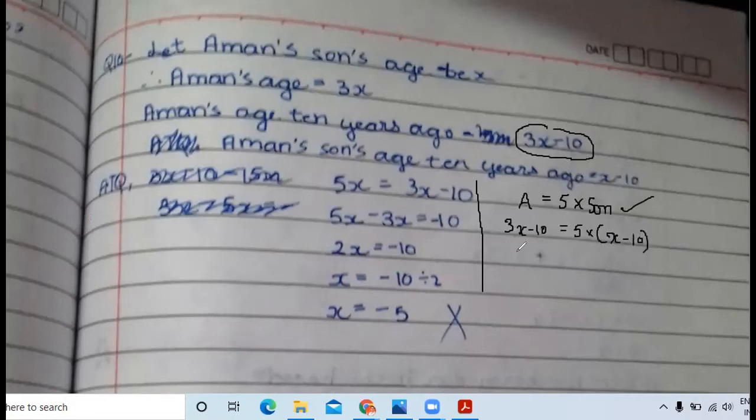Can you tell me what would be the next step? We solve the brackets. Tell me, what would be the next step quickly? What you have done? 3x minus 10 equals to 5x minus 50. Very good.